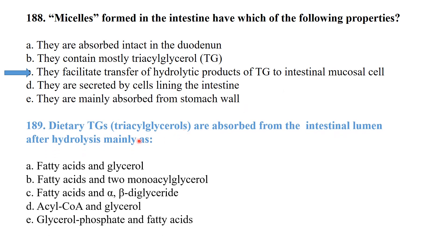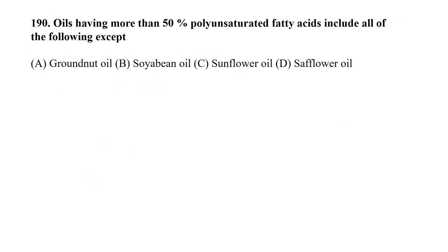MCQ 185: Dietary triglycerides are absorbed from the intestinal lumen after hydrolysis. They are also called neutral fats. Dietary triglycerides are absorbed from the intestinal lumen after hydrolysis mainly as fatty acids and monoglycerides.